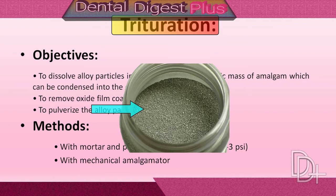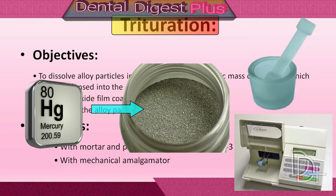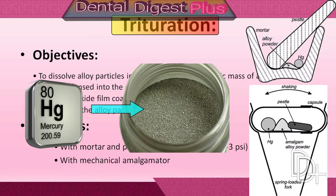The alloy particles are coated with a film of oxide, which is difficult for the mercury to penetrate. This film must be rubbed off in some manner so that a clean surface of alloy can come in contact with the mercury. The oxide layer is removed by abrasion when the alloy particles and mercury are triturated.